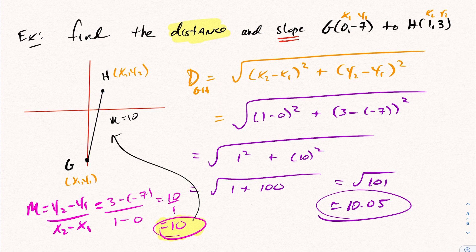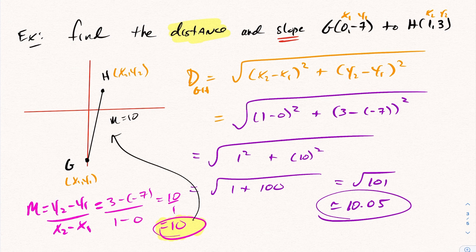To remind you: slope can be positive or negative, but your distance is always a positive number. In this situation the distance and slope came out to nearly the same number, but that is complete coincidence — generally that doesn't happen, so don't try to draw any conclusions between the two.